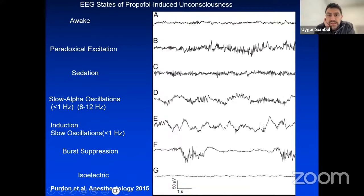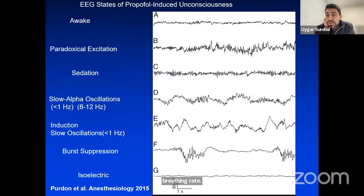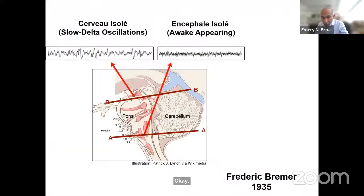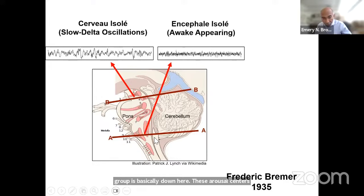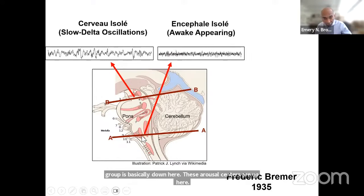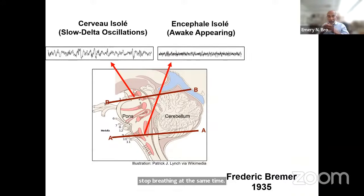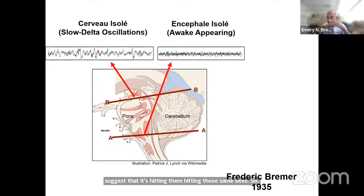Q&A: To what extent are slow delta oscillations related to breathing rate? They have similar rates, and breathing rate is set in brainstem structures like the pre-Bötzinger complex. Those respiratory centers are lower in the brainstem than the arousal centers we've been discussing. When propofol comes up through the basilar artery it also hits the respiratory centers — and indeed, when the slow oscillations come on the EEG, the person often also stops breathing at the same time. Apnea — cessation of respiration — is a very common and expected phenomenon with bolus propofol dosing at the start of general anesthesia.